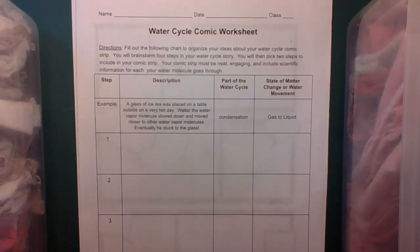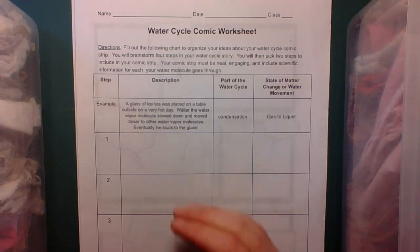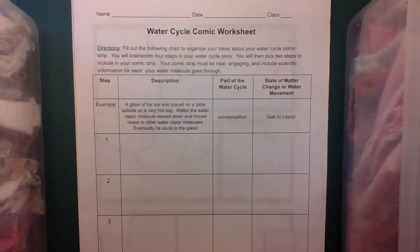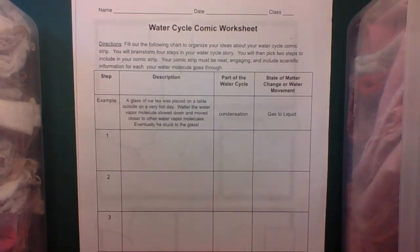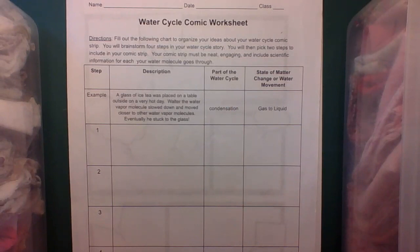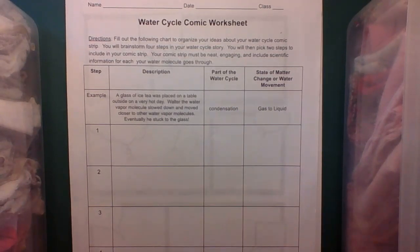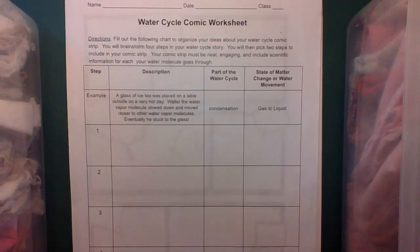So your job on Friday was to think of four steps of your character, your character's journey through the water cycle, what that would look like. And you want to include some phase changes. There may not always be phase changes. Maybe your water droplet character falls from the sky as precipitation as rain, and it's involved with the runoff. Maybe it runs down a hill, or it joins other water molecules in a puddle. So that's not a phase change, but that's something that happens in your comic strip, and you can include that as well.